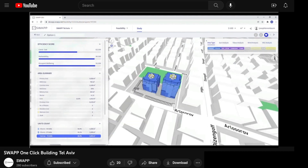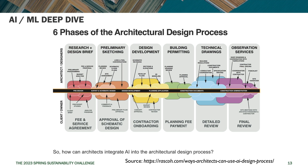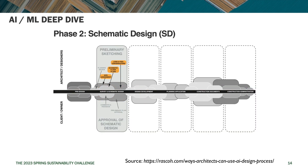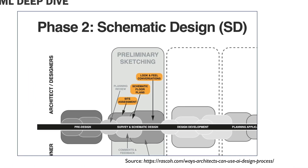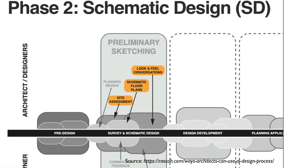I found this interesting look at how the architectural design process flows. I really liked the way this person looked at preliminary sketching, and if we zoom in on that bubble you can see the three use cases for how you would use AI in the schematic design phase: site assessment, schematic floor plans, and look-and-feel conversations. Tomorrow I'll get into a deep dive on site assessment and schematic floor plans; right now we're going to go into how you can use some of these tools for look-and-feel conversations.